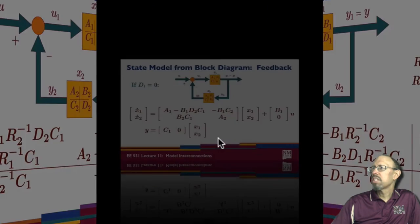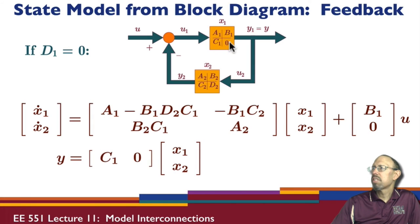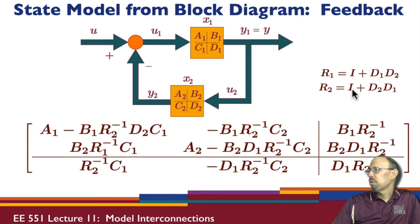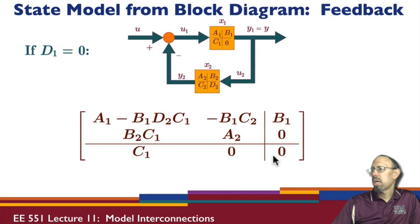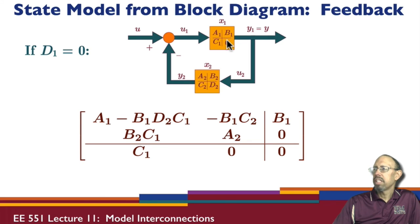What happens if one of the feedthrough terms is zero? Everything simplifies greatly — there are no inverses to worry about. If D1 is zero, both R1 and R2 are just identity matrices, and the ABCD matrices simplify greatly. This is what the A, B, C, D matrices look like in the feedback loop when one of them has D equal to zero.